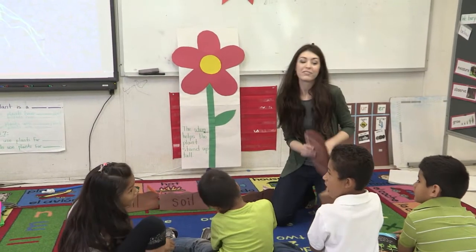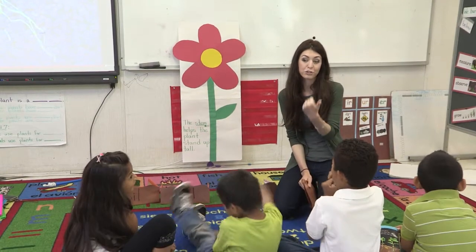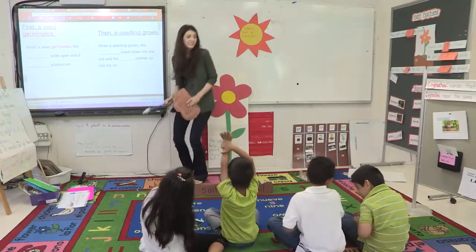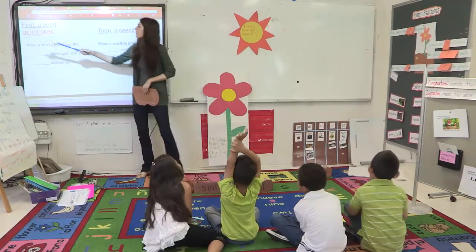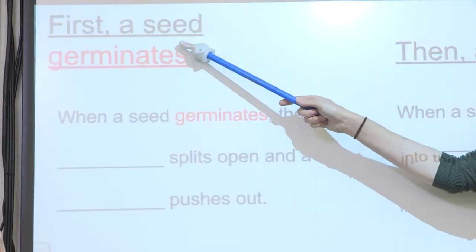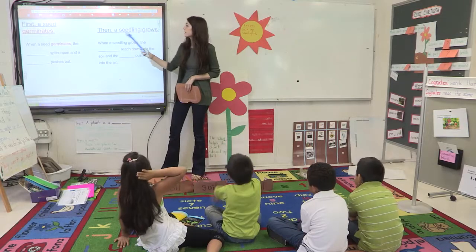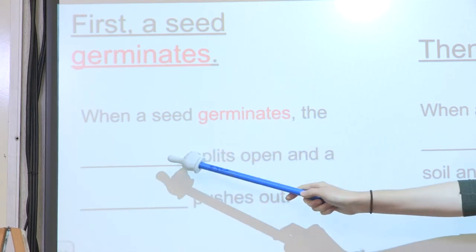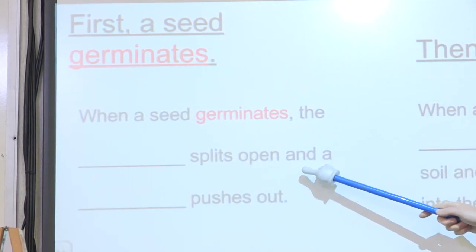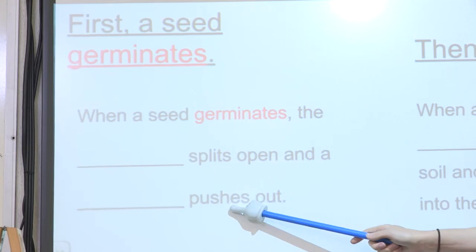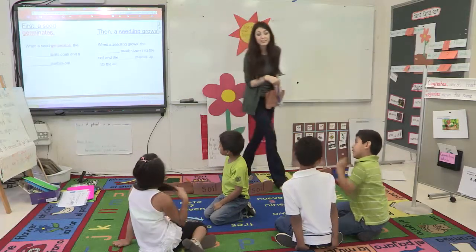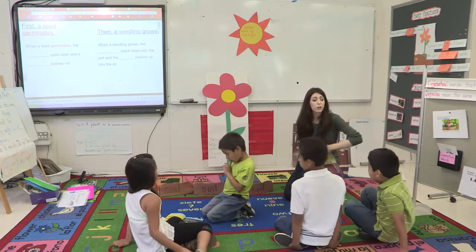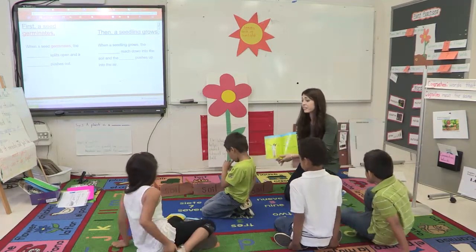I'm going to have you guys see if you can tell me a sentence about germination and about the seedling. The sentences tell us about how first a seed germinates, then a seedling grows. So when a seed germinates, the blank — read with me — splits open and a blank pushes out. Now if you get stuck, you can always go back to the book. Good readers go back and find information when they need to find information.